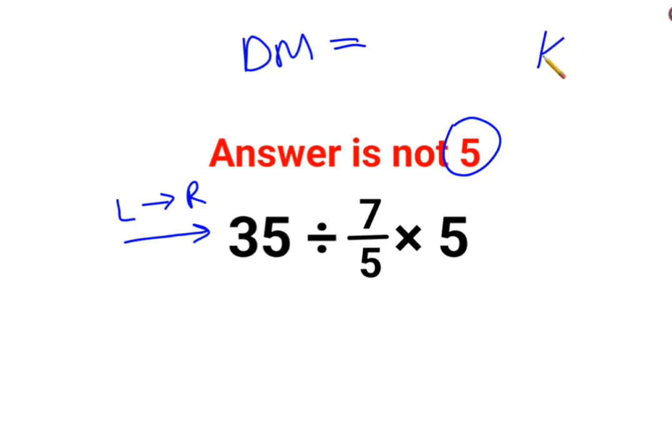When you have something like this, you have to follow the rules of KCF. K stands for keeping the first number as it is. C stands for changing the division sign to multiplication. F stands for flipping or taking the reciprocal of 7 upon 5, which is 5 upon 7, multiplied by 5.